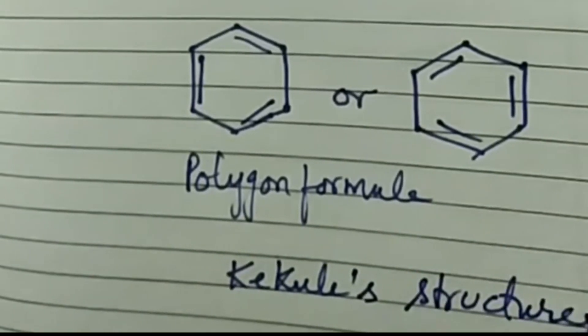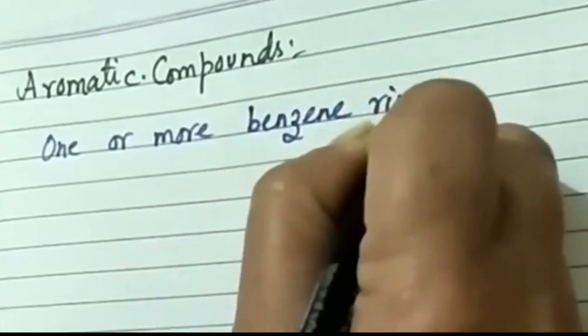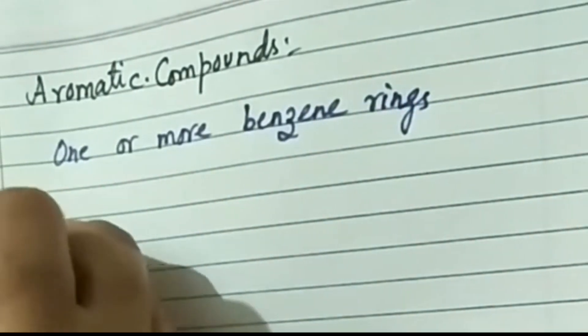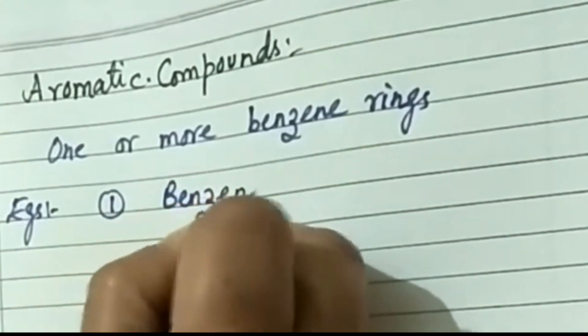Benzene is an ideal aromatic compound. Aromatic compounds are those carbon compounds which contain one or more isolated or fused benzene rings. Benzene itself is the ideal aromatic compound.